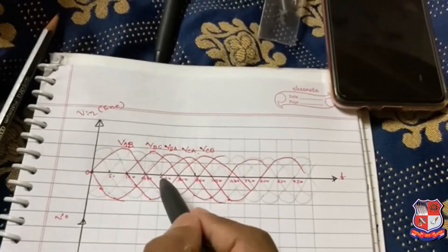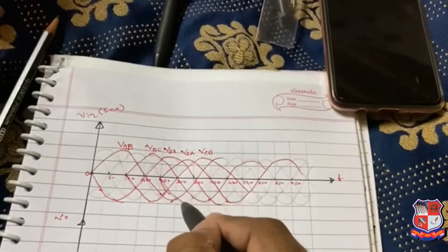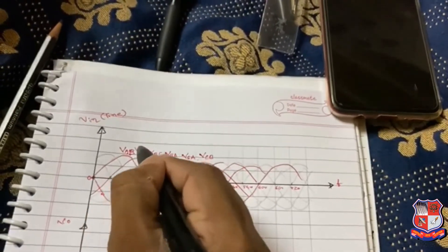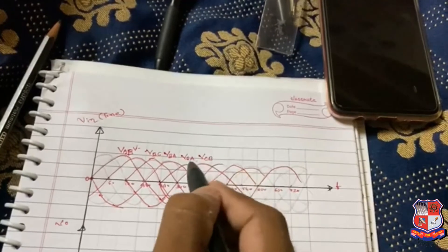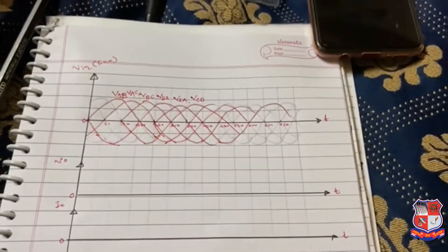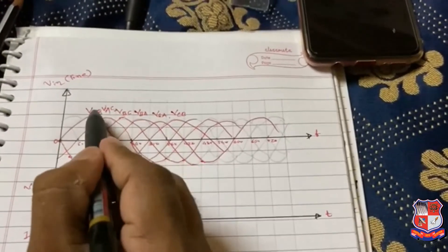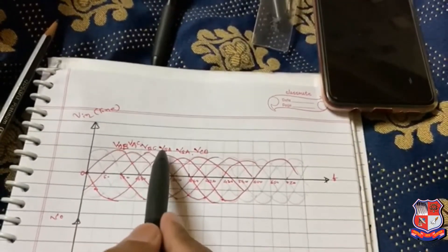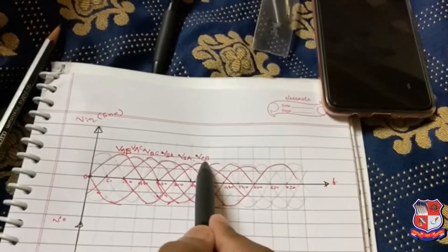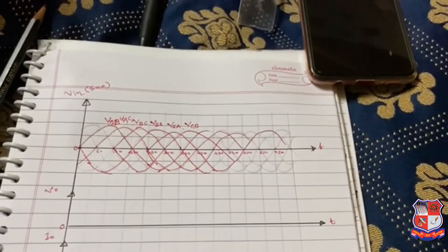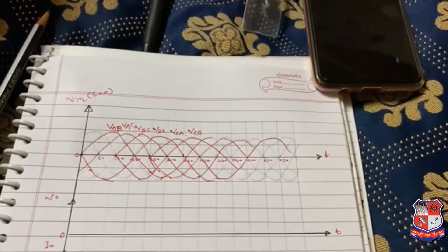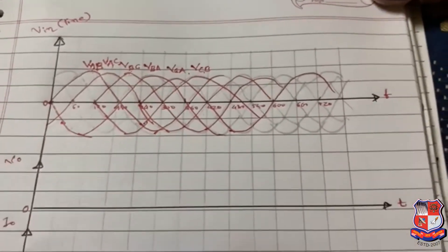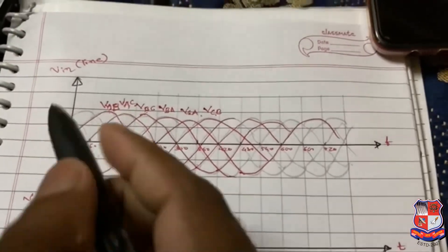So there are six voltages: VAB, VAC, VBC, VBA, VCA, VCB. This is the input voltage in form of line voltage to our rectifier.